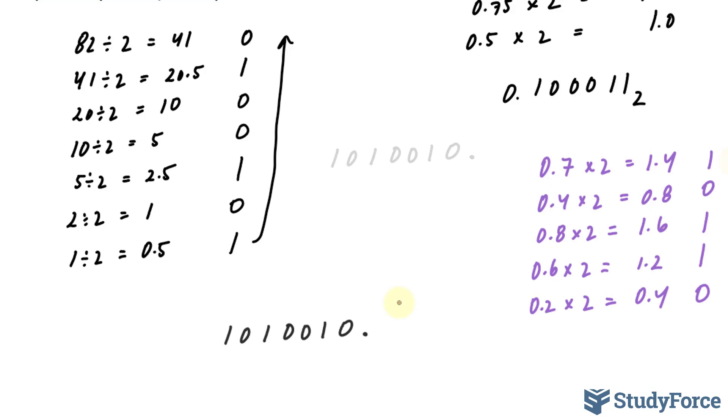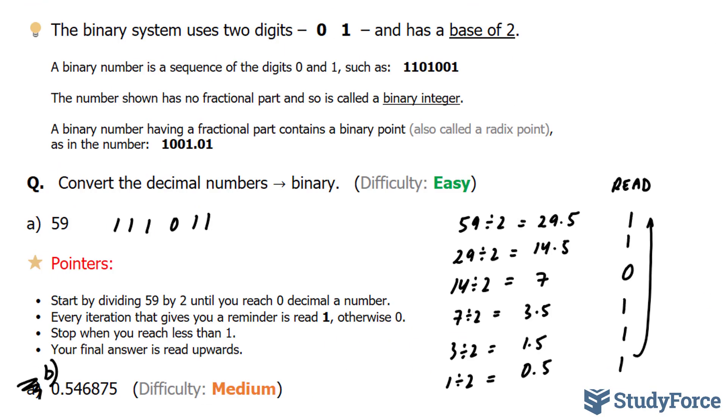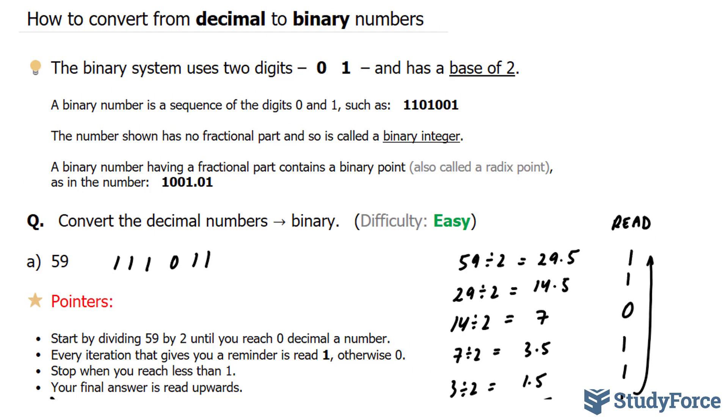Therefore, our final answer is this number, and that's the radix point, 1, 0, 1, 1, 0. And to show repetition, I'll put these three dots. An ellipsis. And there you have it. Three examples on how to convert from decimal to binary numbers.